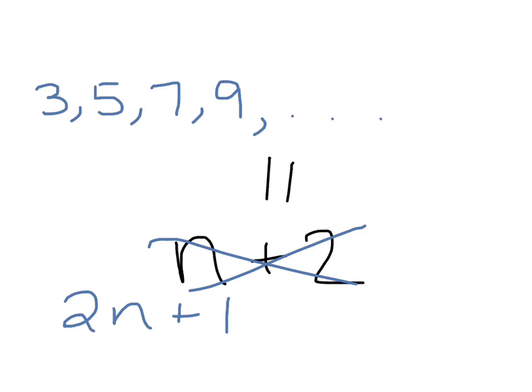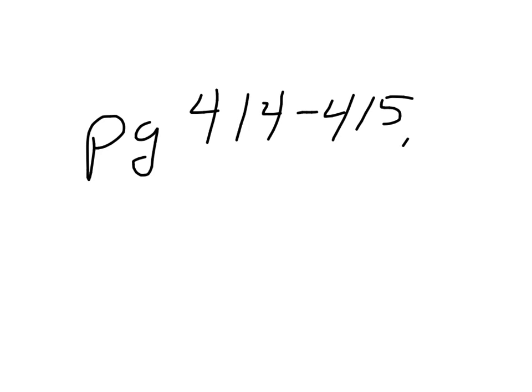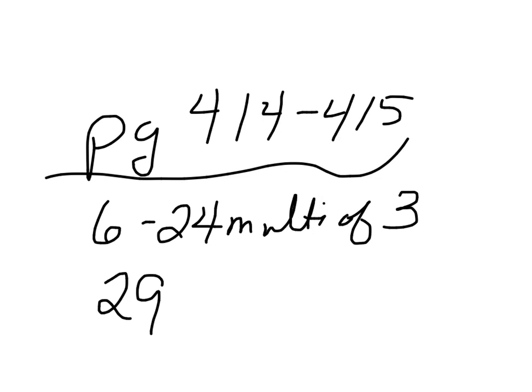Now, the only thing I didn't write on the screen was I did not write down what you guys noticed. Like, you guys noticed they were all odds. And they were going up by 2. That kind of thing. I didn't write that down. But that's what you would do for the first part. What do you think? So, on page 414 to 415, 6 through 24, multiples of 3, and 29. And if you forgot what that means, multiples of 3, hey, here's my pattern. 6, 9, 12, 15, 18. What am I doing? Going up by 3.